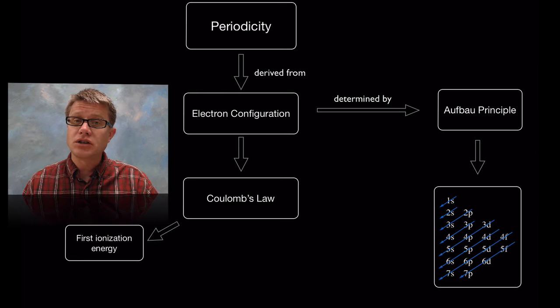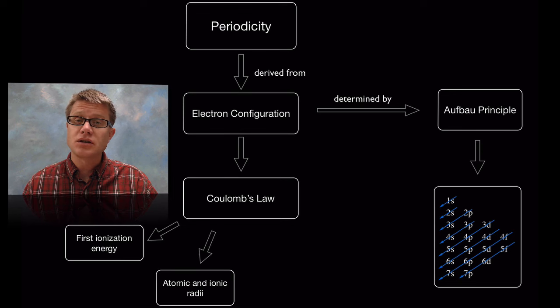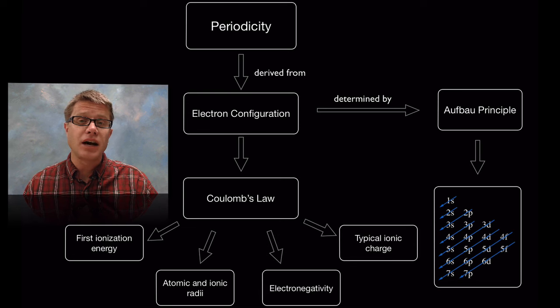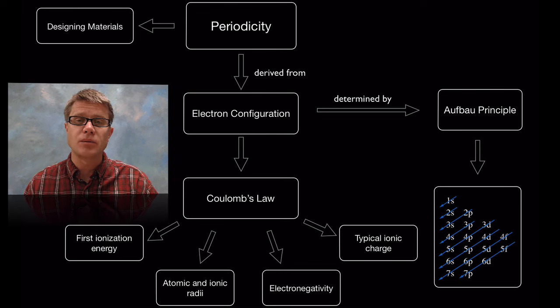It explains changes in the ionization energy, changes in the atomic and ionic radii—how big the atom or ion is—electronegativity, and finally the ion charge. And so if you really understand Coulomb's law you can kind of work your way through this on the periodic table.